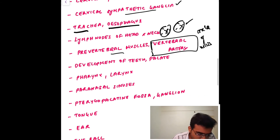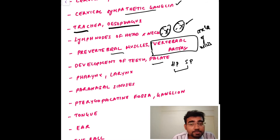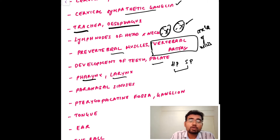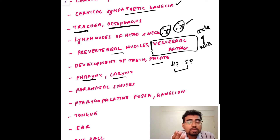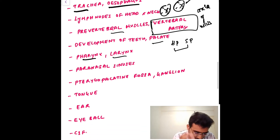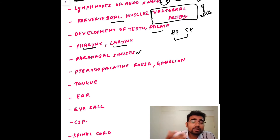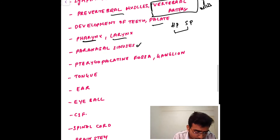For the development of the teeth and palate, cover the hard palate and soft palate separately — how each develops, the associated muscles, and the applied aspects. For the pharynx and larynx, study the pharyngeal and laryngeal muscles, how the pharynx and larynx develop, Killian's dehiscence, and other applied aspects.